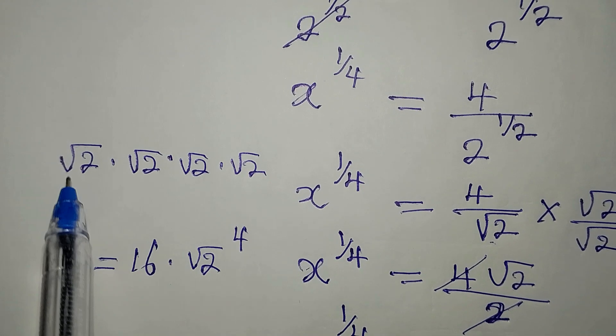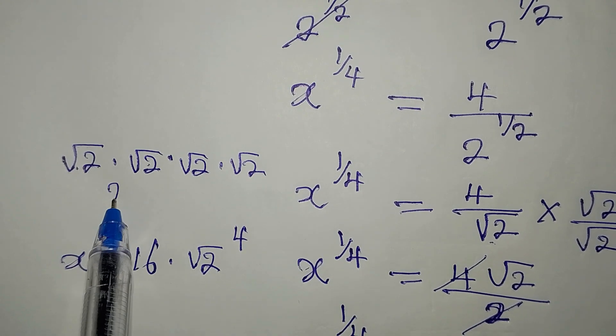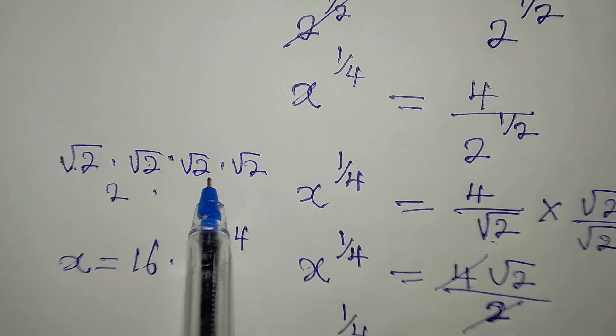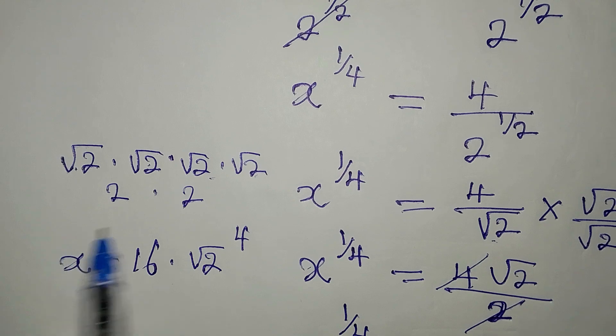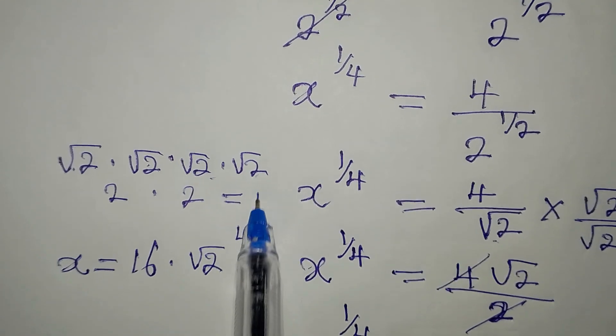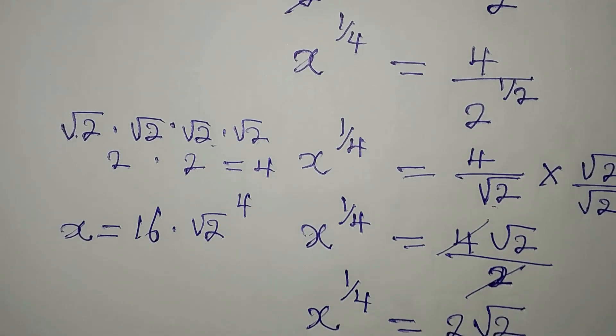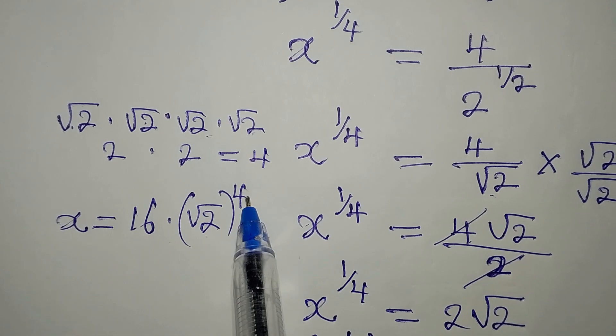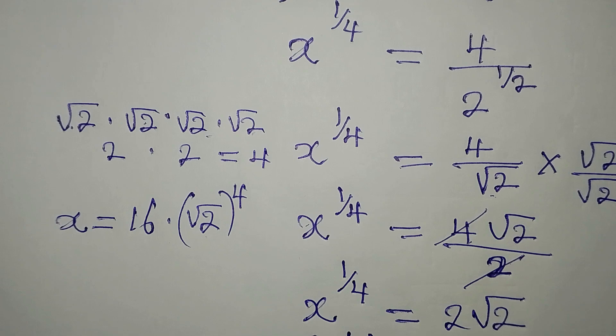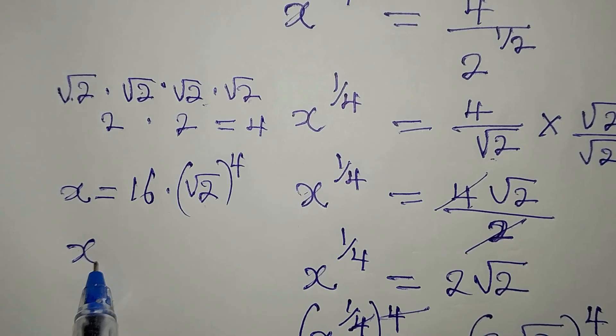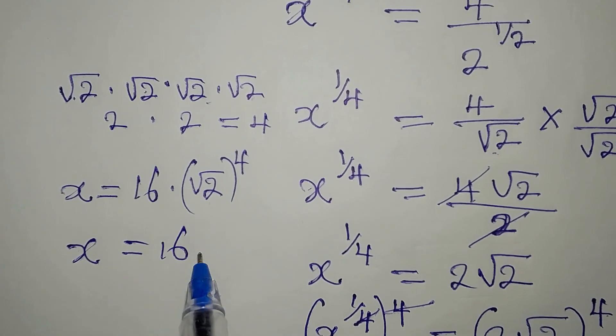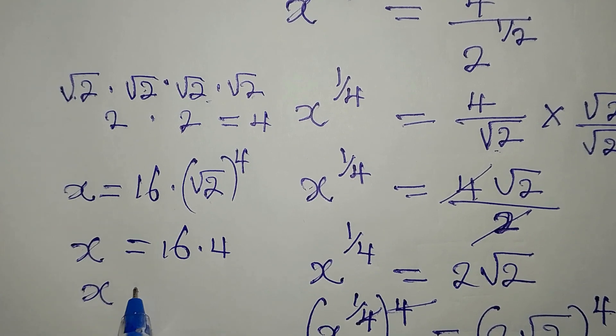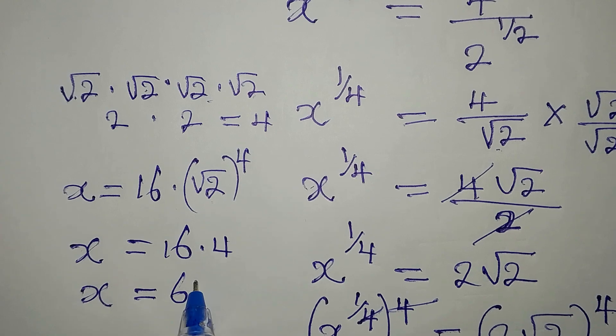Root 2 times root 2 will give us 2. That is square root of 4, 2. Then times root 2 times root 2 will give us another 2. And at the end of the day, we have 4. So this means that root 2 to the power of 4 is equal to 4. Therefore, our x is equal to 16 times 4. And then our x is finally equal to 64.